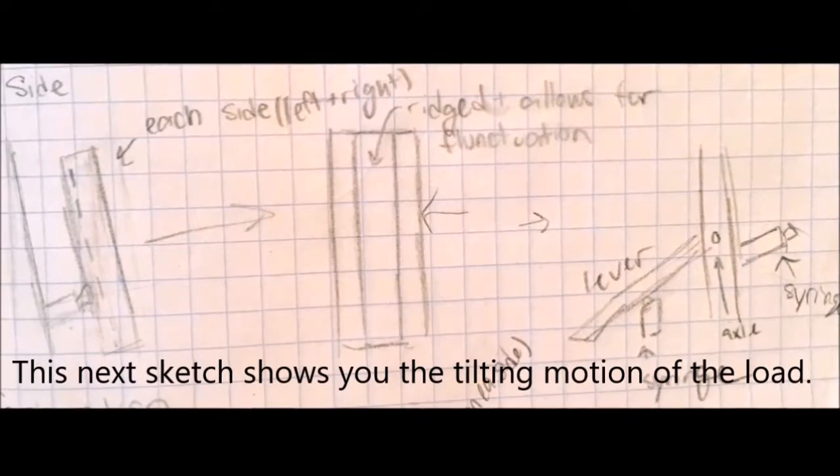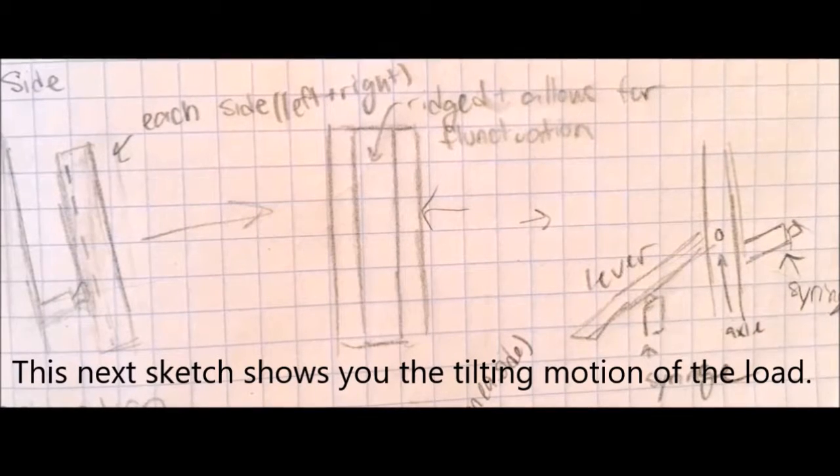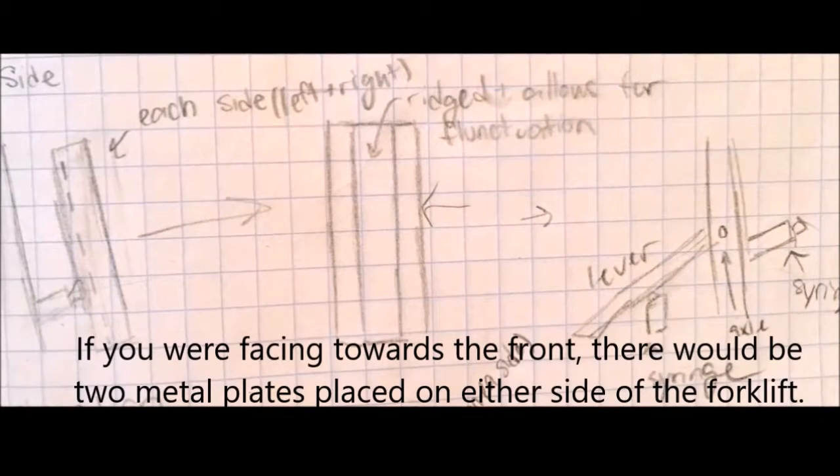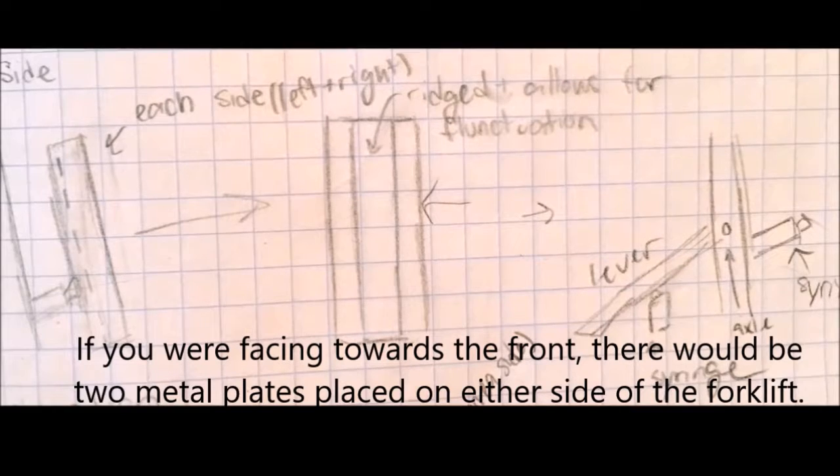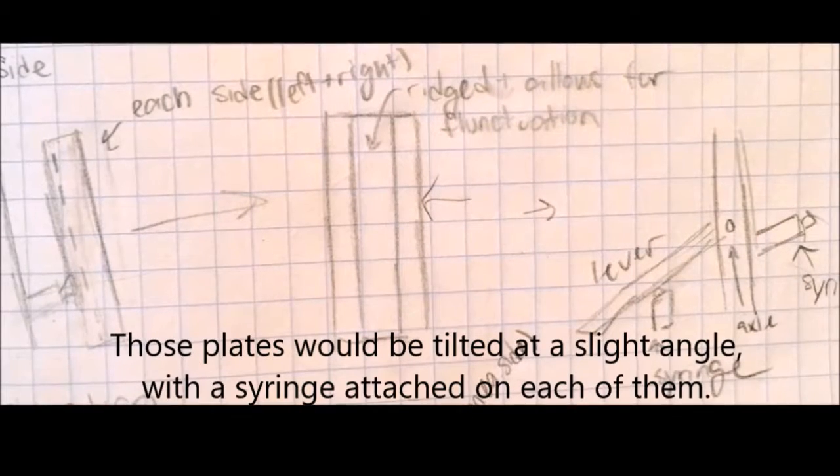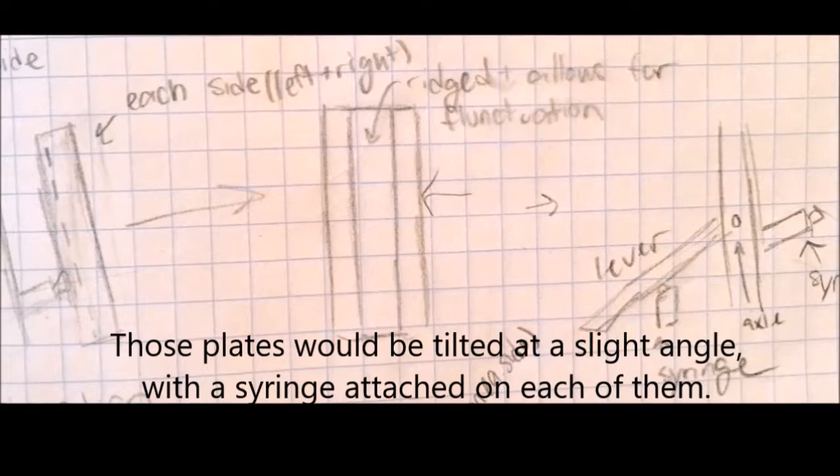This next sketch shows you the tilting motion of the load. If you were facing towards the front, there would be two metal plates placed on either side of the forklift. Those plates would be tilted at a slight angle, with the syringe attached on each of them.